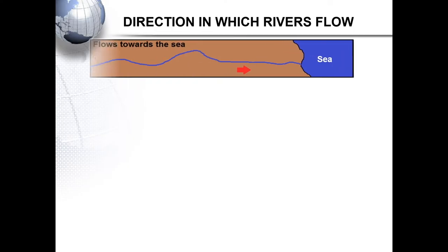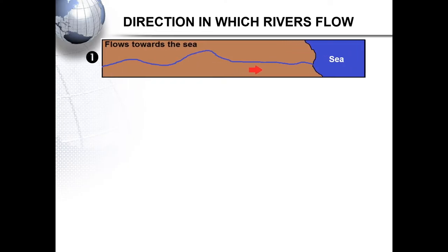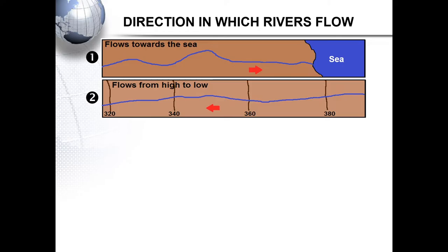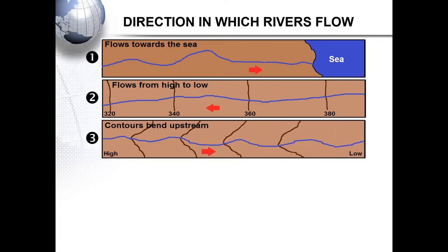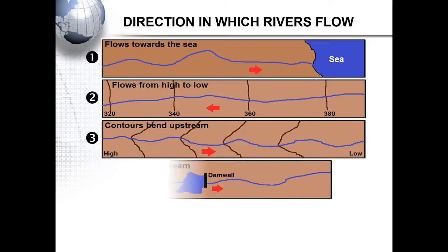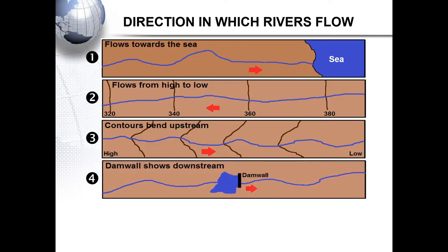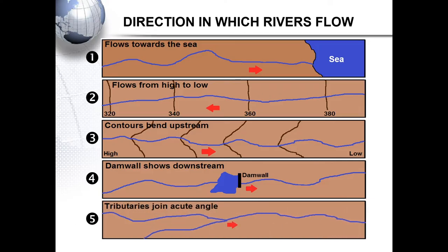In map work, we can also ask you to determine the direction in which a river flows. Remember, our rivers flow towards the sea. They flow from a high area to a low area — here you can use your contour lines. Contour lines will always bend upstream. Dam walls are constructed downstream. And tributaries join at an acute angle.